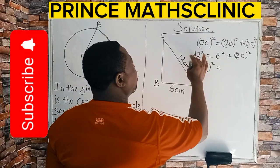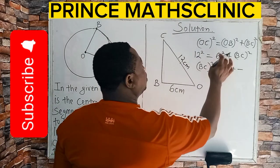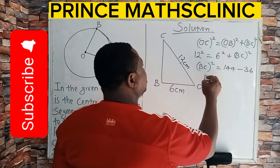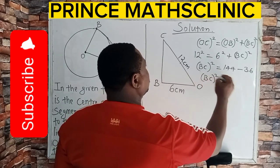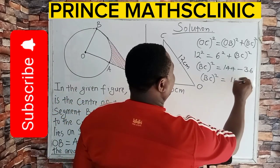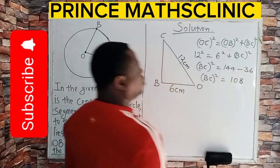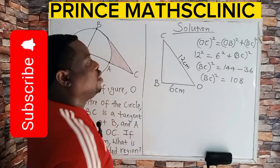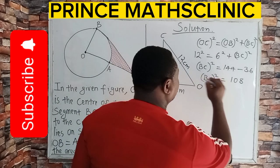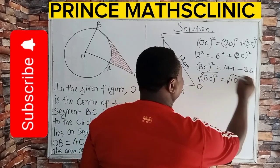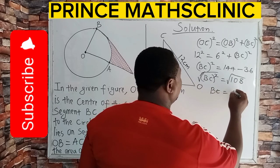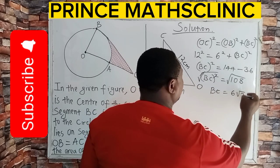6 squared is 36. So BC squared is 144 minus 36, which is simply 108. Then the square root of 108, if you take the square root of both sides, I will get my BC to be 6 root 3.